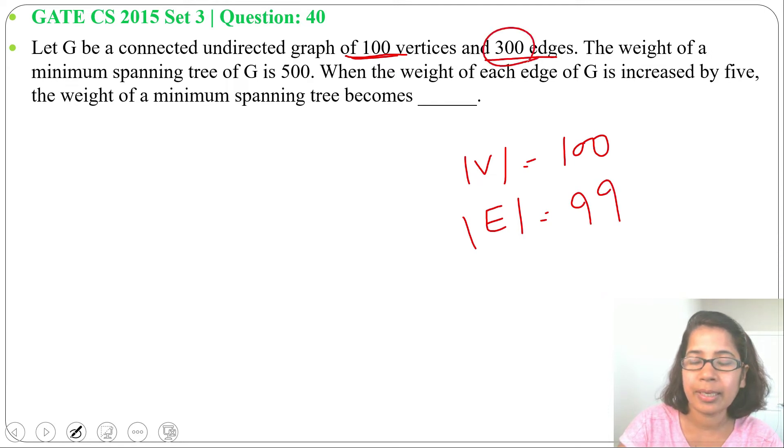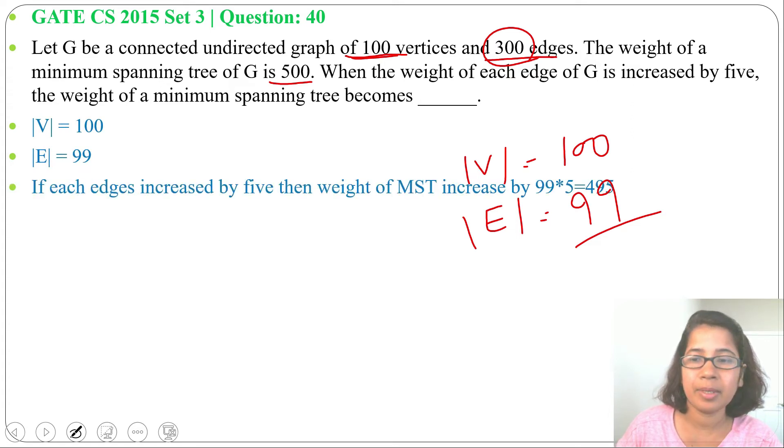Total 300 edges, but from that in minimum spanning tree, we choose 99 edges. So in minimum spanning tree there are 99 edges. So 99 edges will increase by 5, means 99 multiplication 5, that's 495.